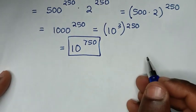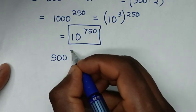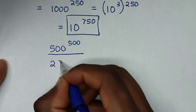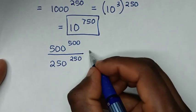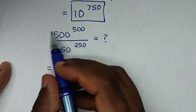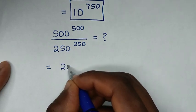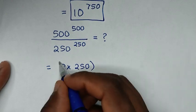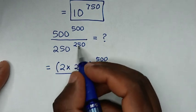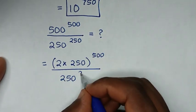Or, to solve in another method — from the original problem, which was 500 power of 500 divided by 250 power of 250. It will be equal to: since 500 is the same as 2 times 250, we write that as 2 times 250, bracket, power of 500, over 250 power of 250.